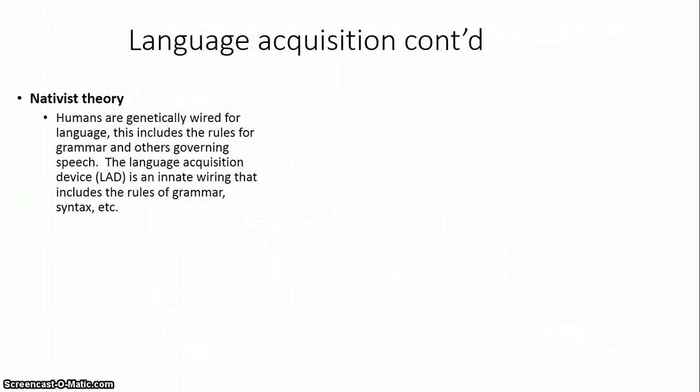The first one we want to look at is the nativist view, and this is simply saying that we are genetically pre-wired for language. And that pre-wiring means that we come with certain structures in our brain that are responsible for understanding the rules of grammar and others that govern speech, so that we are more or less born with the ability to understand language, understand the complex rules of grammar, syntax, and semantics. And as we develop, this ability is enhanced by our interactions. But basically, the nativist is saying that we are, by nature, oriented to developing language.